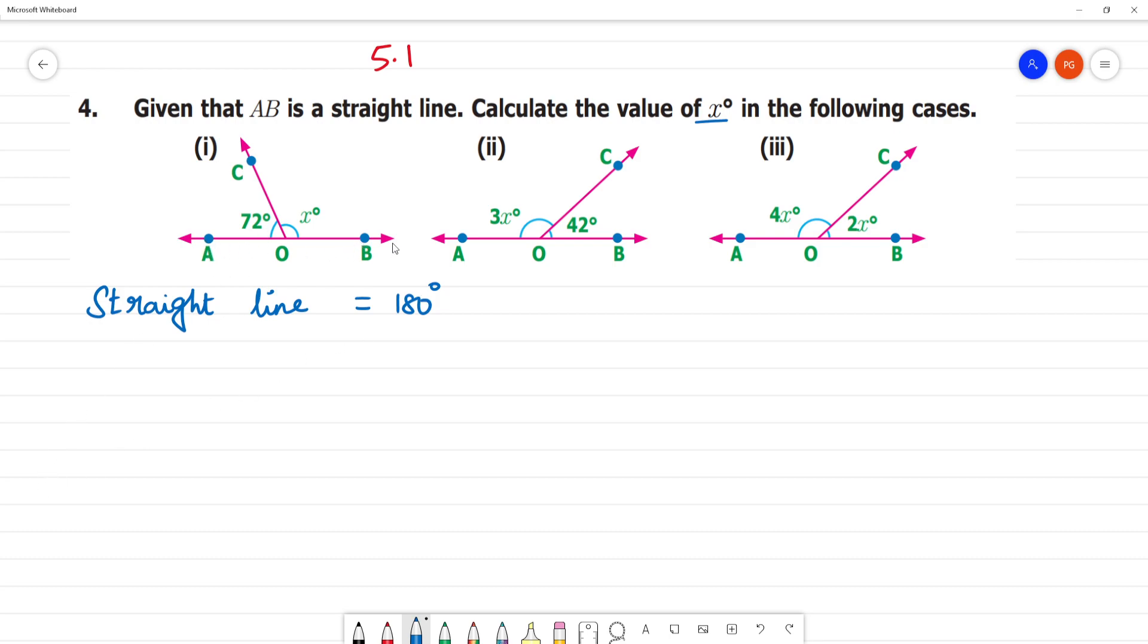This is AB, a straight line. So in the straight line, angle AOC plus angle BOC equals 180 degrees. Angle AOC is 72 degrees plus x degree equals 180 degrees. Then what is x?